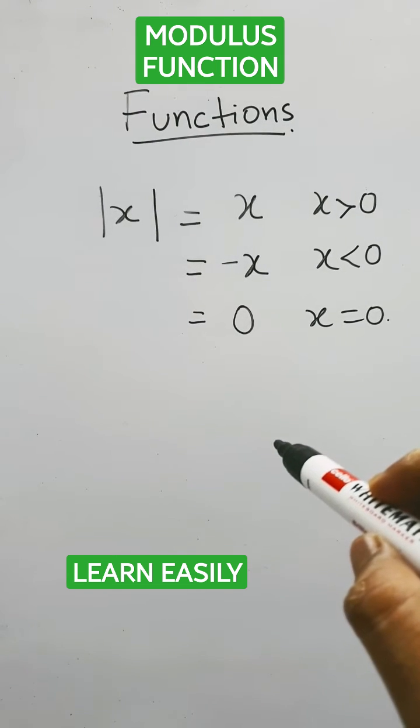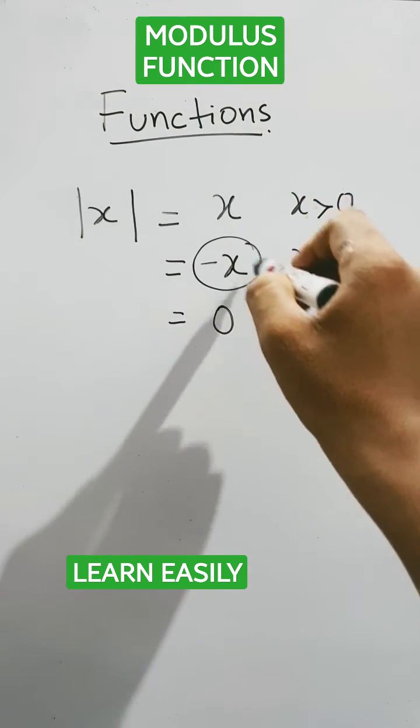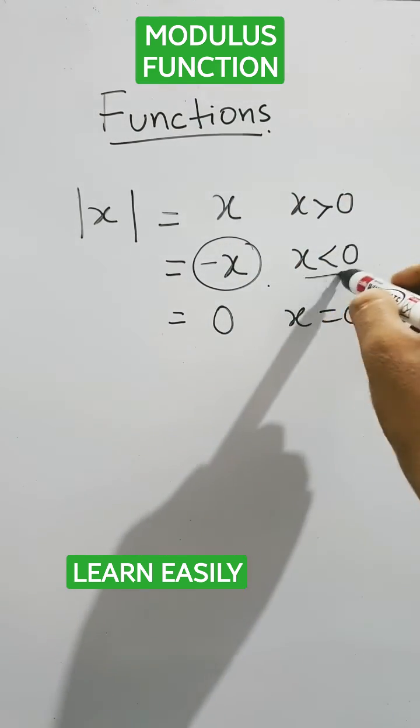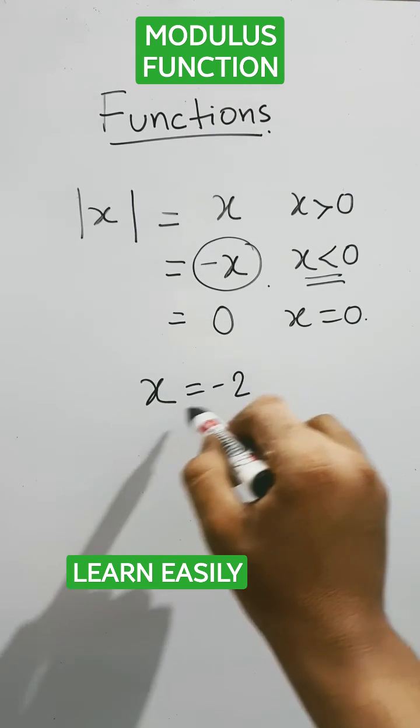Now, you can think that modulus is always positive, then how can this be negative? Actually, if x is less than 0, we can assume that x equals minus 2. Just take an example.